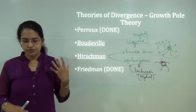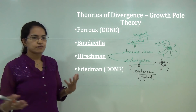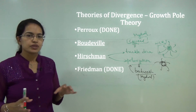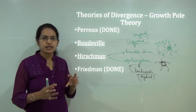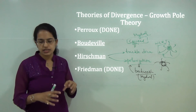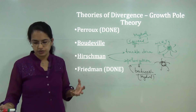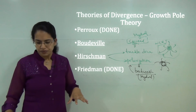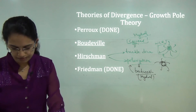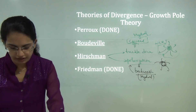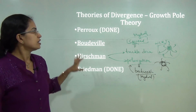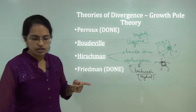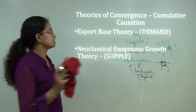The next is Friedman. His theory explained that growth is externally induced and its impact is seen on the labour market, with migration patterns affected by the growth pattern. With this we cover the theories of divergence, and we now move on to the theories of convergence.